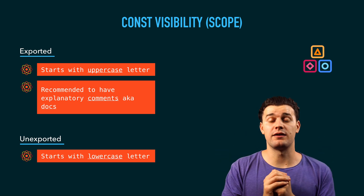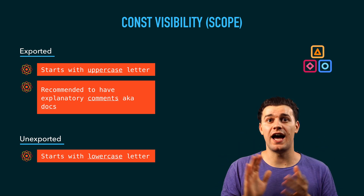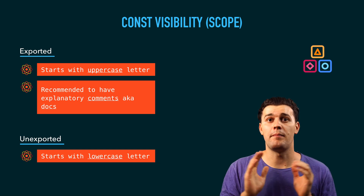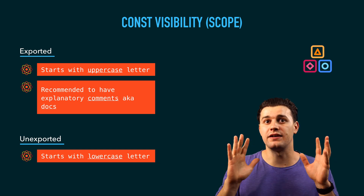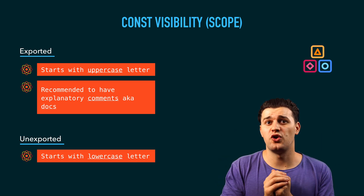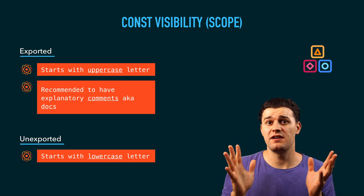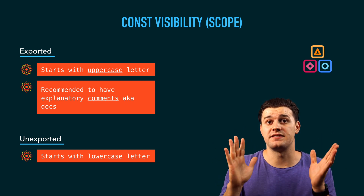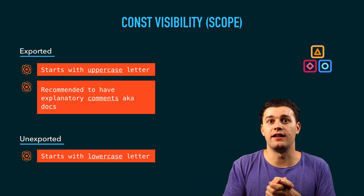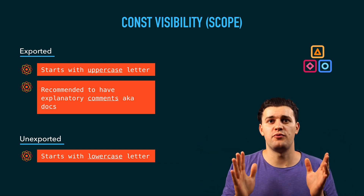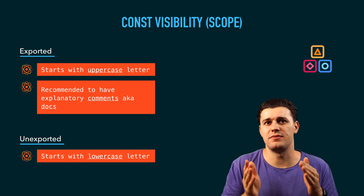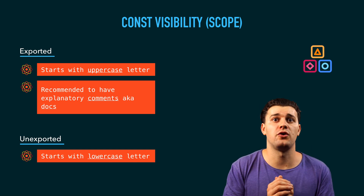This rule is applicable for anything in Go — a custom type, a constant, a variable — anything that starts with uppercase is exported. It's also good practice to document exported symbols because there's somebody out there using your code from the outside. A good practice in Go is to document exported symbols by having comments, since comments are documentation for your code in Go.